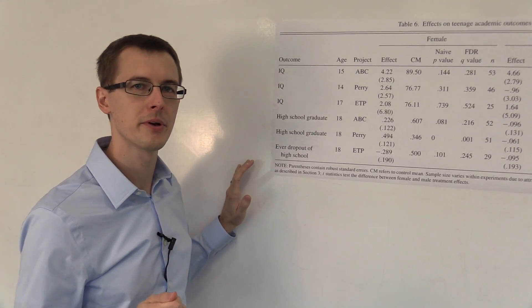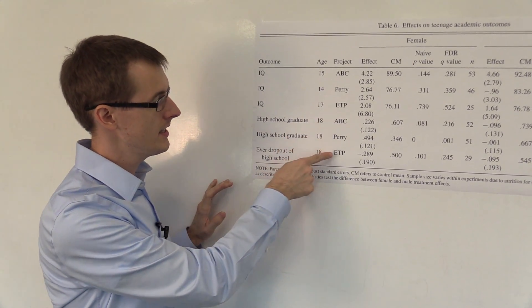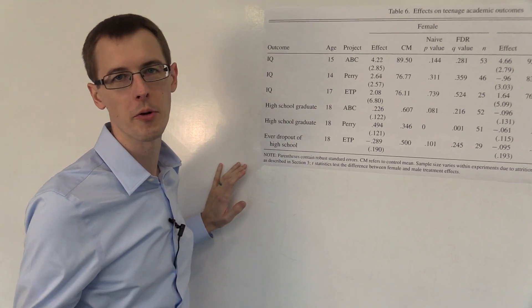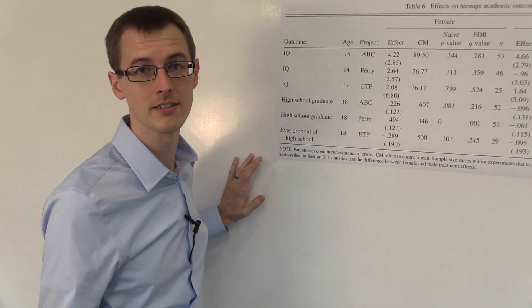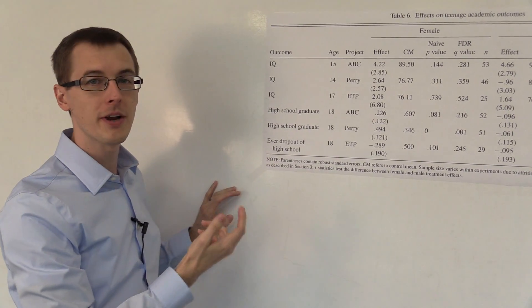He looked at the Perry Preschool Experiment and two other experiments, ABC and ETP. I'm not going to worry about those for now, so just ignore those lines and just focus on the two lines labeled Perry.